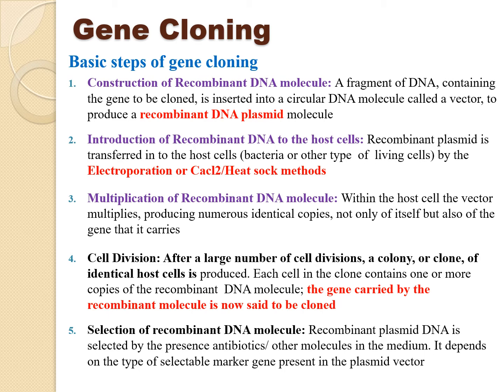The fourth step is cell division. After a large number of cell divisions, a colony or clone of identical host cells is produced. The bacterium divides into two, and each new bacterium has its own recombinant DNA molecules. These two bacteria can individually produce even more recombinant DNA molecules, so the gene carried by the recombinant is now said to be cloned.